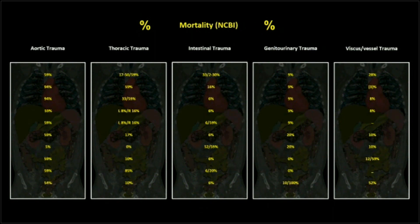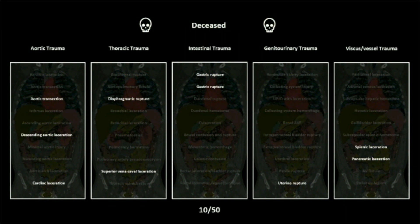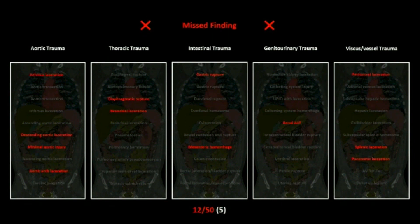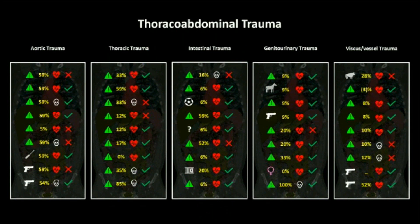I also went to the National Center for Biometric Information and pulled the expected mortalities for every one of these injuries, so you'll see that with each one. And then whether or not the patient lived is certainly an item of interest — a deceased patient will be designated with that ghoulish skull icon. And then whether the radiologist actually made the call or not — a red X if the radiologist missed the finding, like Ms. Othmar used to put on your grade school tests. So we have iconized all these things for every one of these entities, and you'll see those at the bottom of the screen.